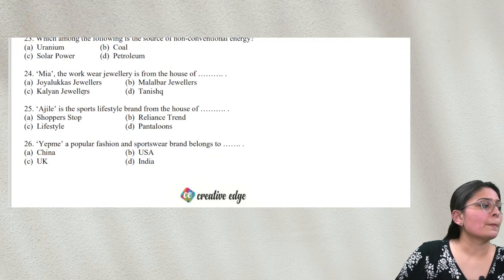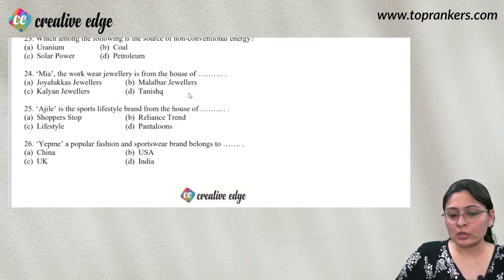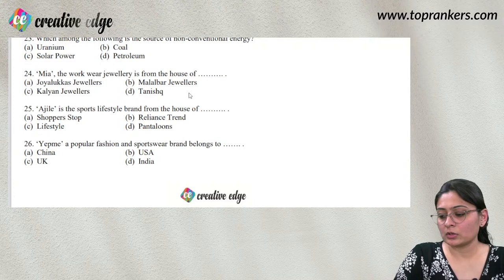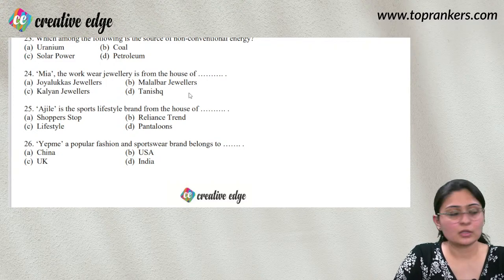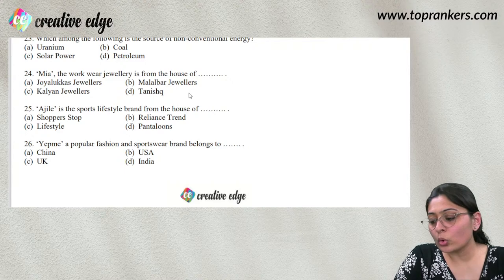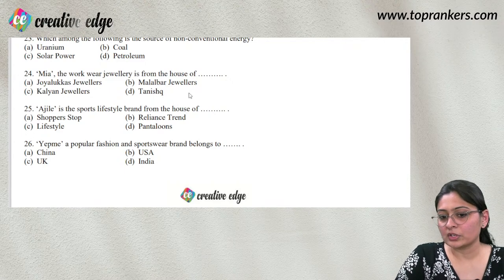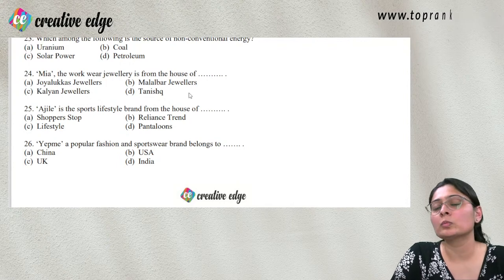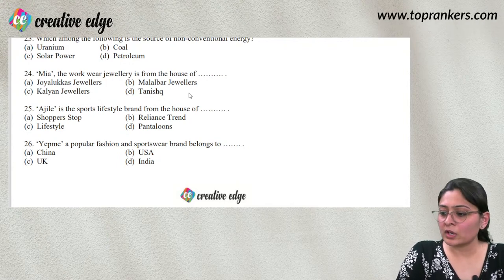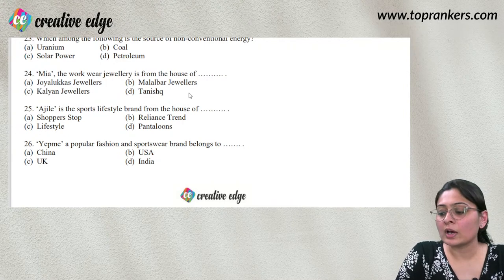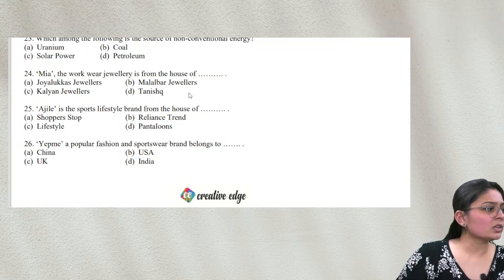Question 24: Mia is the work-wear jewellery brand from the house of Tanishq, and Tanishq is a Tata product. Add Tanishq to your Tata Group list alongside Vistara, Singapore Airlines, Air India, Westside, Starbucks, and Tanishq.